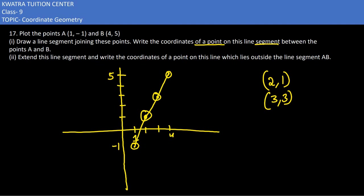And now they are saying extend this line segment and write the coordinates of a point on this line which lies outside the line segment AB. AB se kaunse lines hai, matlab kaunse aise points hai jo bahar ki taraf laye kar rahe hai.